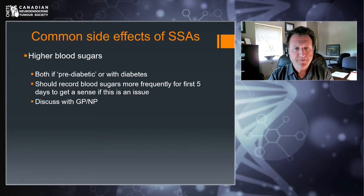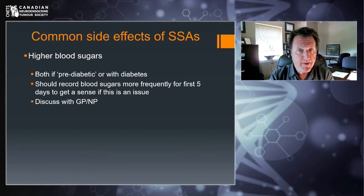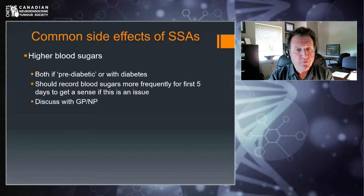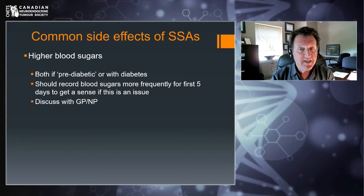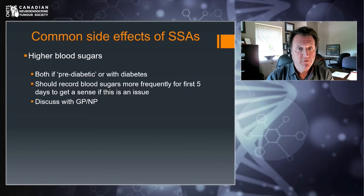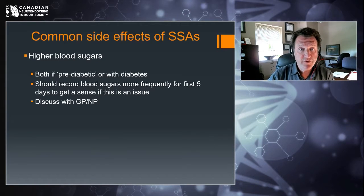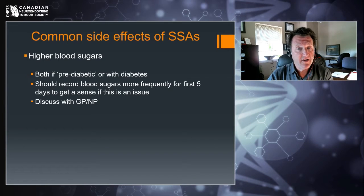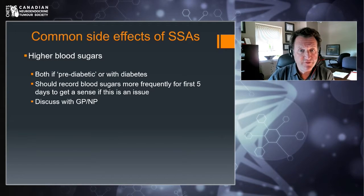Another important concept: if you have had diabetes or are pre-diabetic, these drugs can escalate blood sugar. It's important to monitor more frequently for at least the first five days to get a sense of this as an issue. It can be sneaky and creep up over time. If you're finding yourself thirstier than usual, peeing more, more fatigued, or losing weight, remember that blood sugar elevation can be important. Discuss it with your GP or nurse practitioner as well as your oncologist to make sure this doesn't become a problem requiring management.